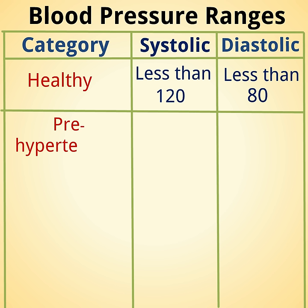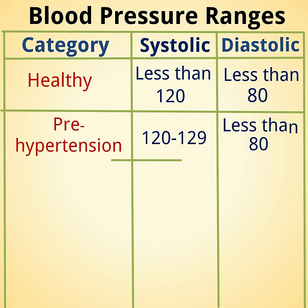The prehypertension category has systolic 120 to 129, and diastolic less than 80.